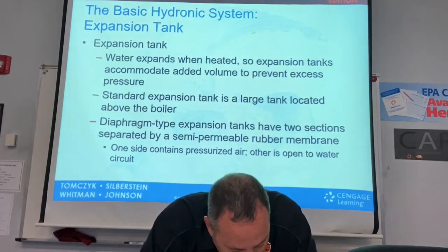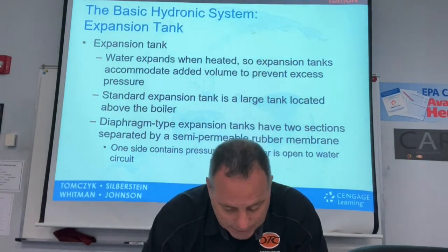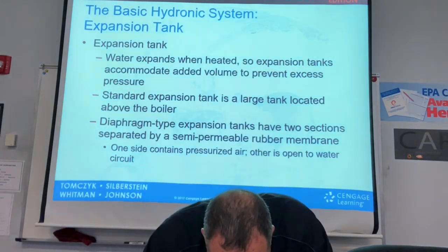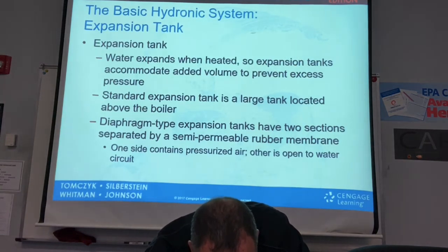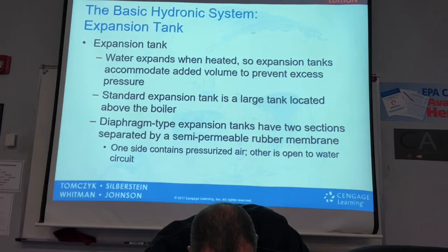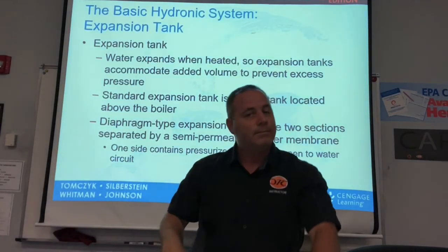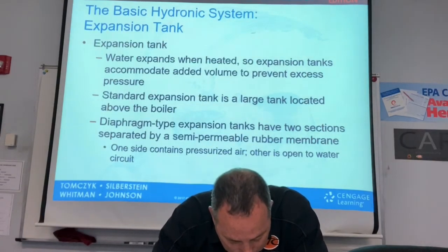There are two types of expansion tanks that accommodate the overload of heated water pressure. The first is called a compression tank — simply a steel tank filled with atmospheric air. As the water pressure increases from heating, the air creates a cushion of space.